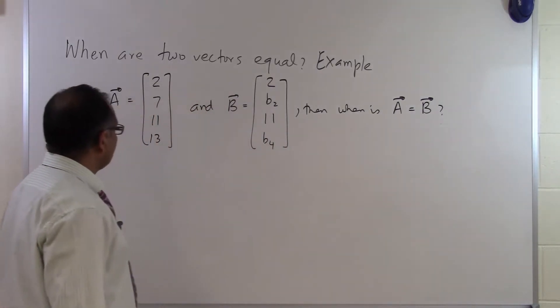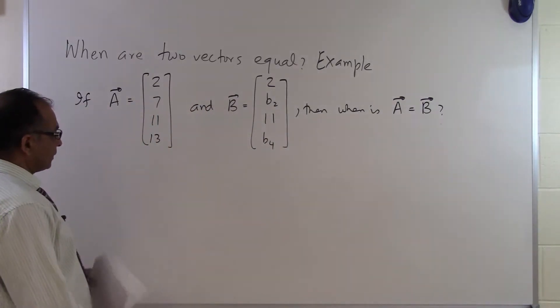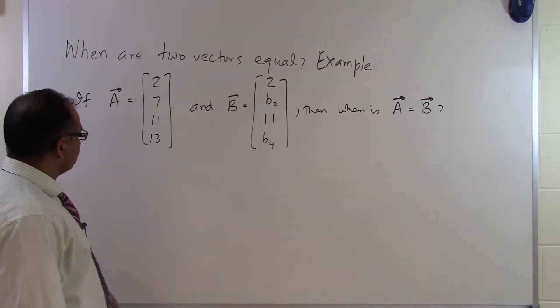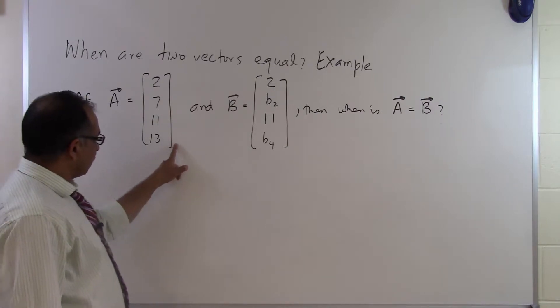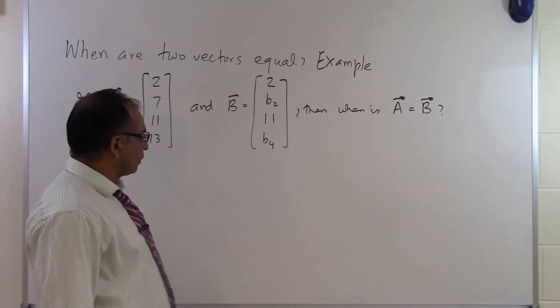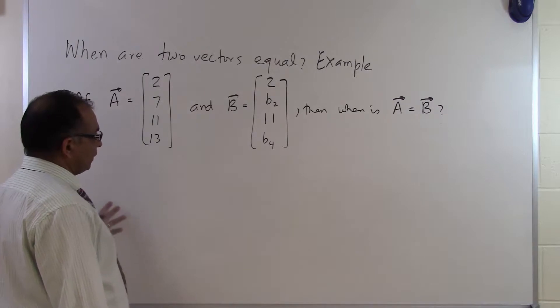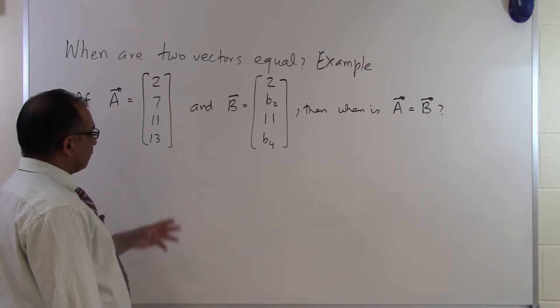What will make A and B equal? First, check if the dimension is the same. We have four entries in a column vector here and four entries in a column vector there. Then we need to verify that each corresponding component is the same.